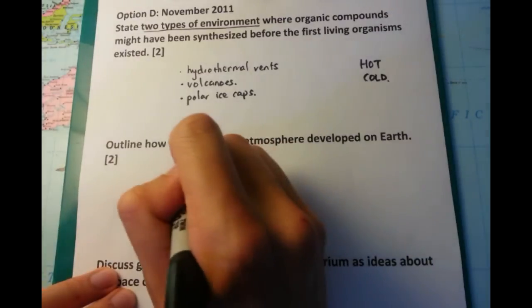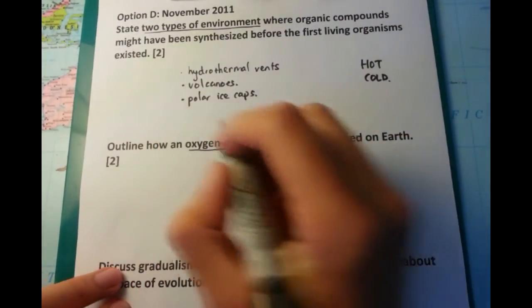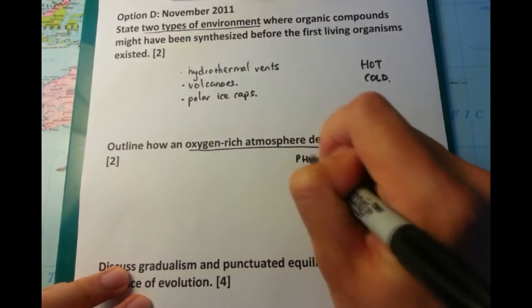In fact, I'm not even going to detail anymore because I want to keep it simple. Second question. Outline how an oxygen-rich atmosphere developed on Earth.